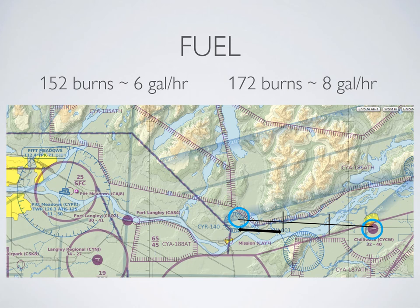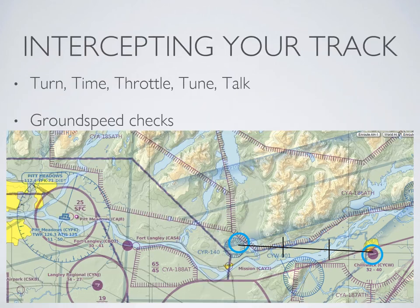Now we have our diversion mapped out. We have a set heading point, a track, a distance, an ETA, and a fuel requirement. This is where you can use the Five T's to help you remember. Once you turn onto your track, you'll take the time, set the throttle for a 90-knot ground speed, and then tune and talk.